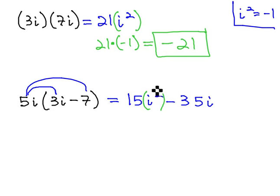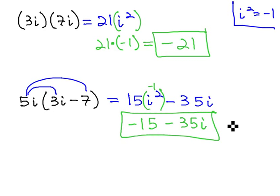However, the i squared is negative 1. 15 times i squared is the same as 15 times negative 1. 15 times negative 1 is negative 15, and we have minus 35i for our final product.